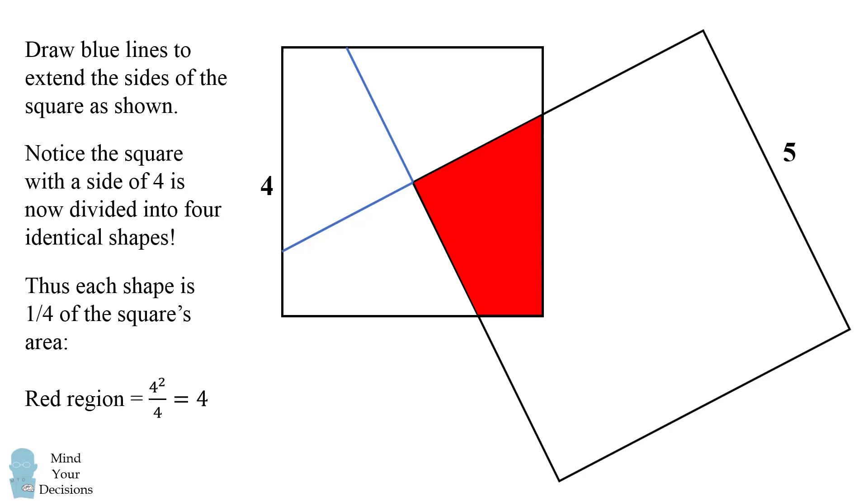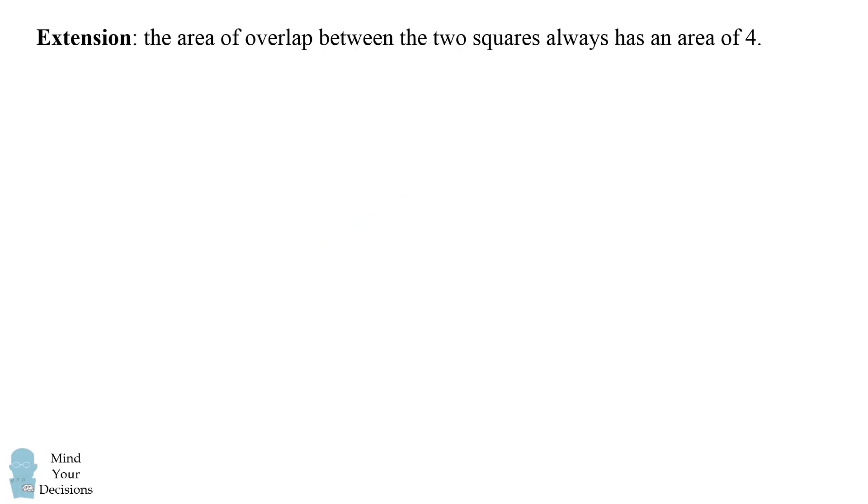Amazing! In fact, we can extend this problem that the area of overlap between the two squares always has an area of 4.